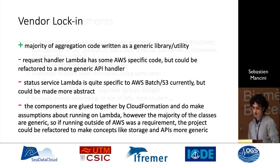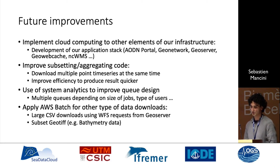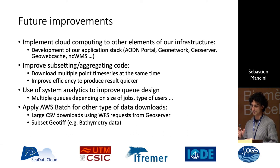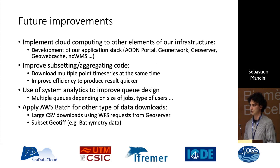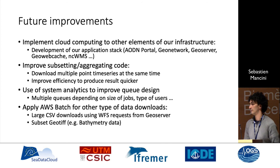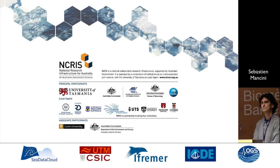This experience with cloud computing has been pretty successful. We want to use it for the development of our application stack, the portal, and everything associated with that. We want to improve the subsetting and aggregating code to improve efficiency. We probably want to dig deeper into system analytics to see if we can set up multiple queues depending on job size or different types of users. And we want to apply batch to other types of data downloads, like large CSV downloads — we currently use GeoServer WFS for big data like moorings — or subsetting GeoTIFF, especially for bathymetry data. Thank you.